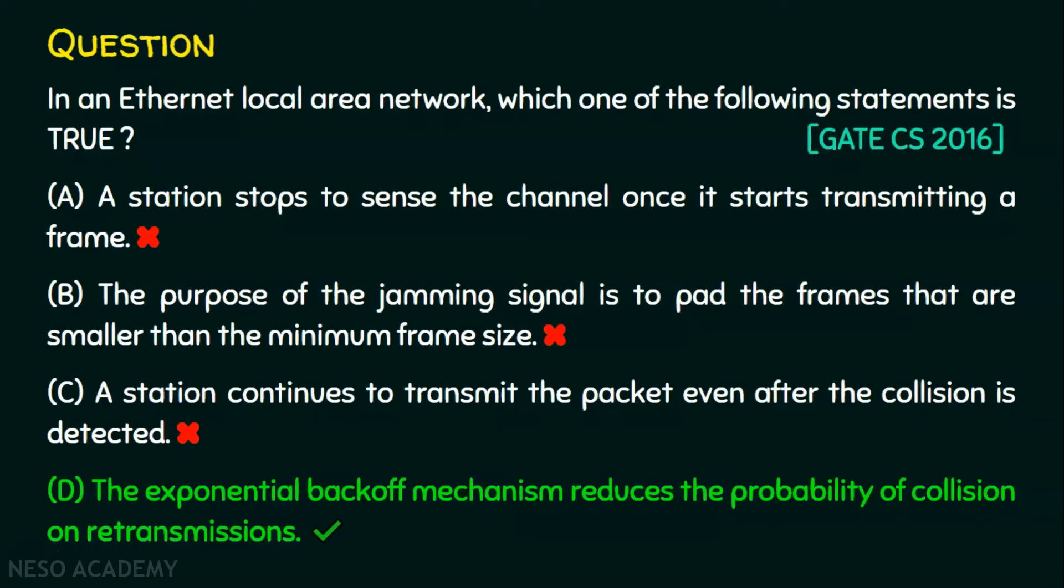Once collision has happened, it will not forward the frame just like that. It will wait for a certain period of time. And even after that time, if the channel is busy, it doubles the waiting time. And even after that waiting time, if the station is busy, it doubles the waiting time. And this strategy is the exponential backoff mechanism, which is used for reducing the probability of collision.